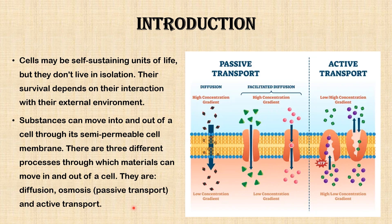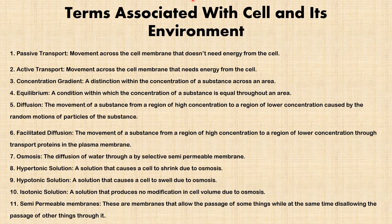There are three different processes through which materials can move in and out of the cell: diffusion, osmosis — both of which are passive transport — and active transport. Here you can see a pictorial representation of passive transport: this is diffusion, this is facilitated diffusion, and then we have active transport. We'll be describing these processes shortly.